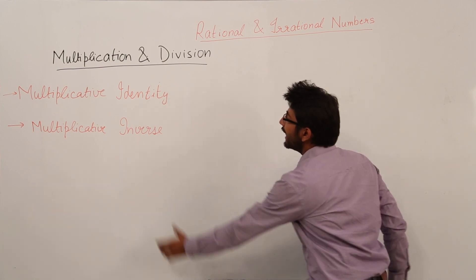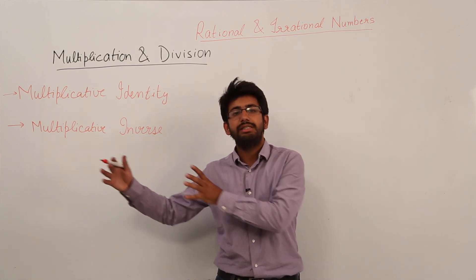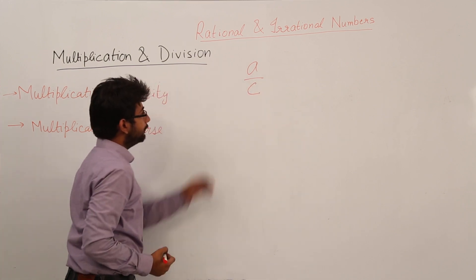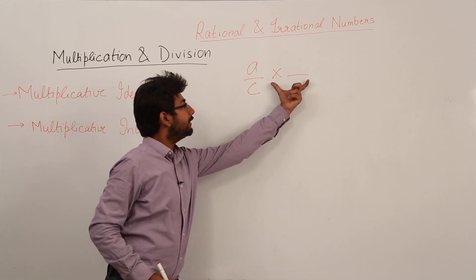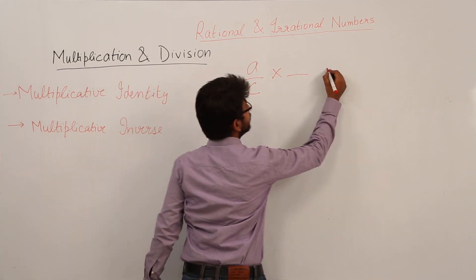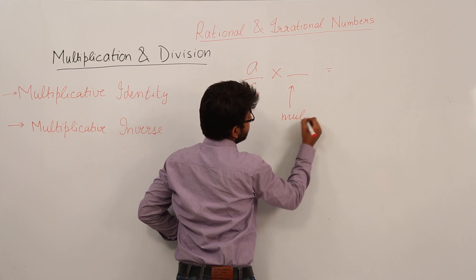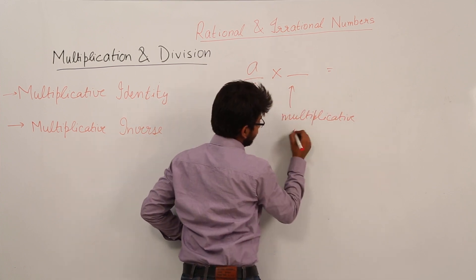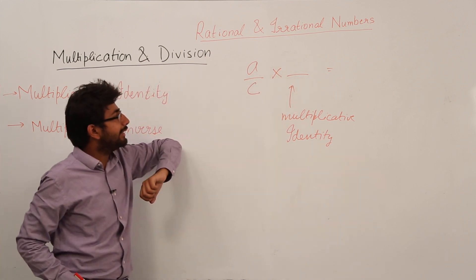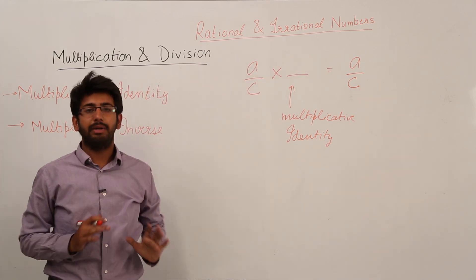Multiplicative identity is that particular number or element which when multiplied with a rational number will give me the same rational number as the product. For example, if I multiply a/c with my multiplicative identity, when I multiply a rational number with the multiplicative identity, my answer should be equal to a/c. Then only I can call this particular element the multiplicative identity.